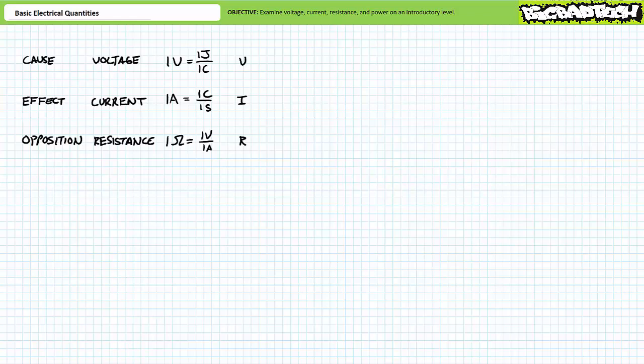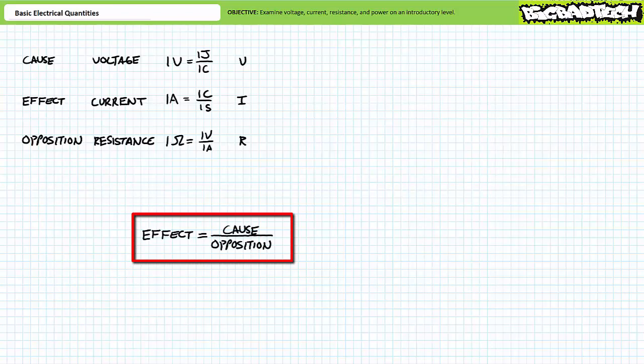You'll often see the concept of resistance represented in shorthand using a capital R. On a very basic level, we can state that the effect induced in some system is equal to the cause over opposition.